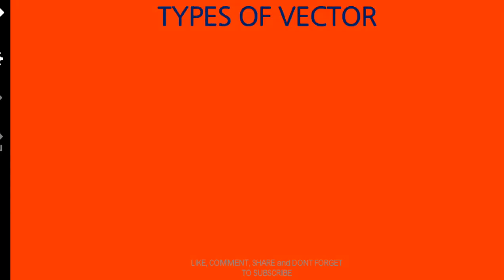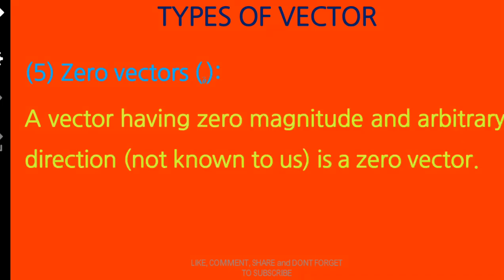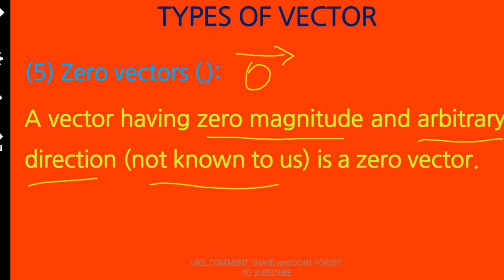The fifth type is zero vectors. A vector having zero magnitude and arbitrary direction is a zero vector. The direction is not known to us — we cannot judge the direction of a zero vector. Such vectors are said to be zero vectors.